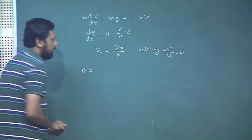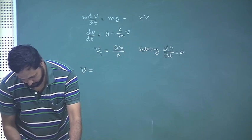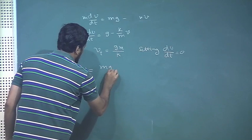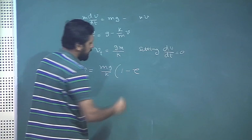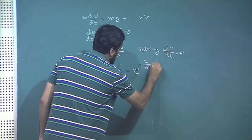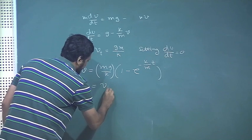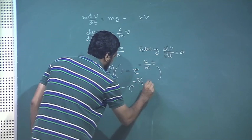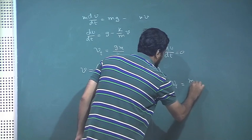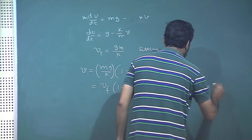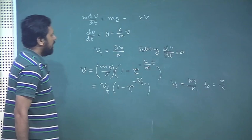If we solve the full equation we get an expression for v. If we write this as v_t(1 - e^(-t/t_0)), we see that v_t becomes mg/k and t_0 becomes m/k.